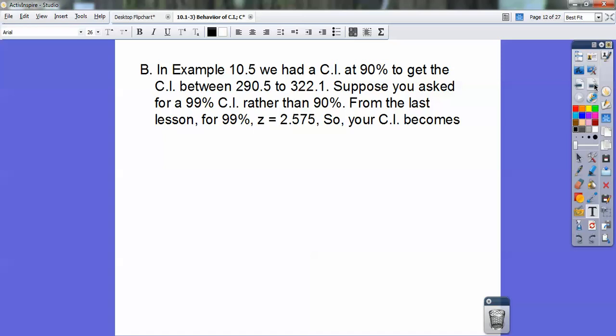Your Z score becomes 2.575, so your confidence interval becomes, there's my formula, and I plug it in, and I get that goes from 306.3 plus or minus 24.8. This is what I do first, I do this times this, and then I take that and divide it by the square root of 20, and you should get 24.8.